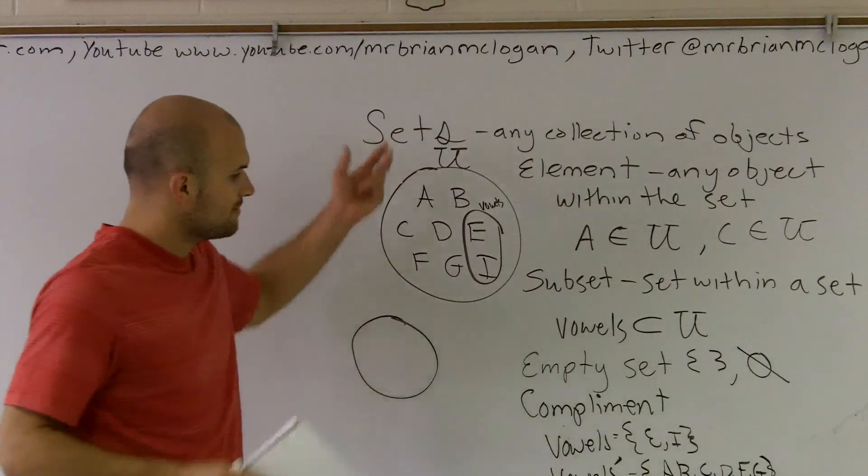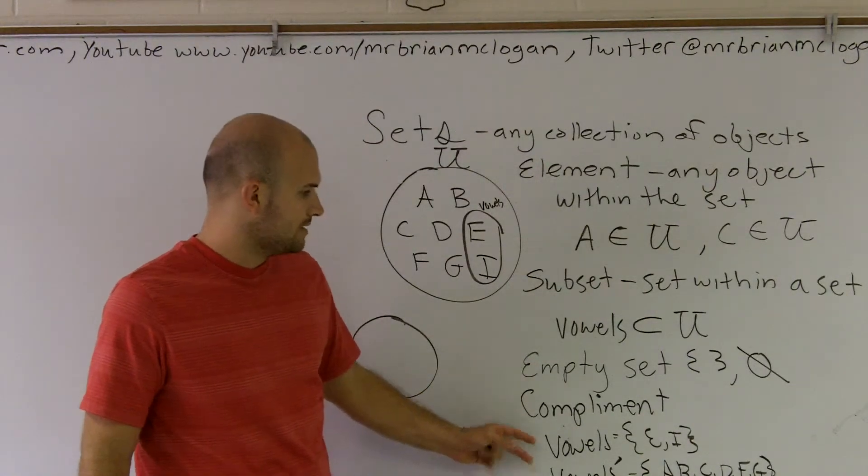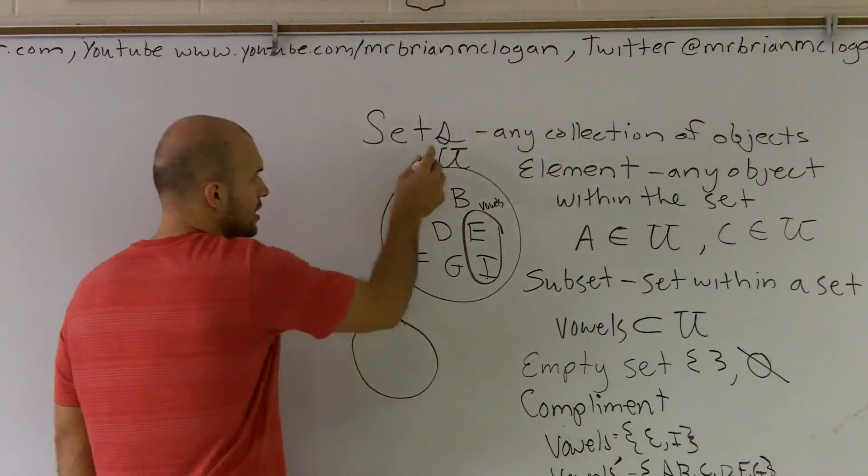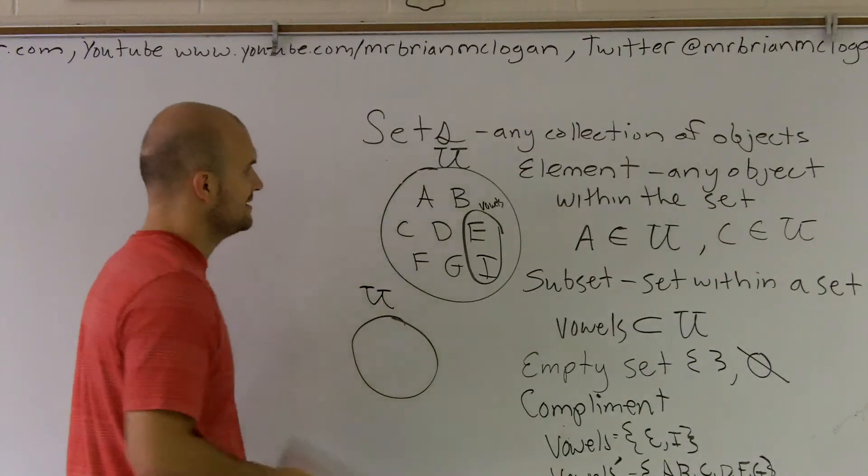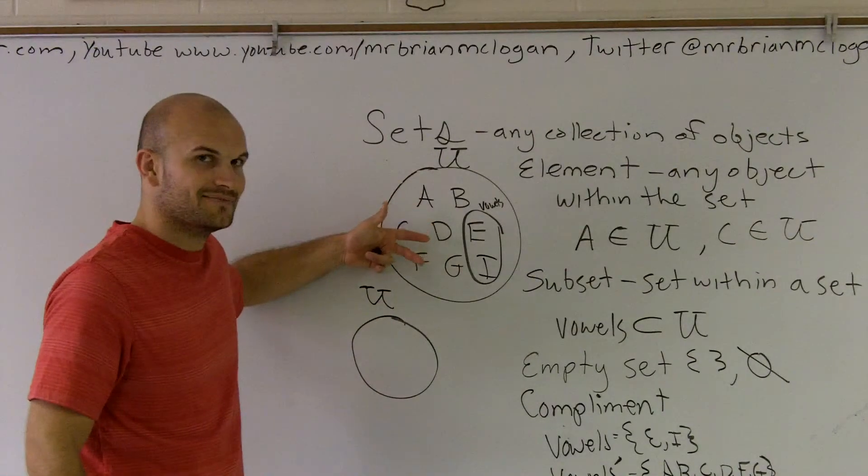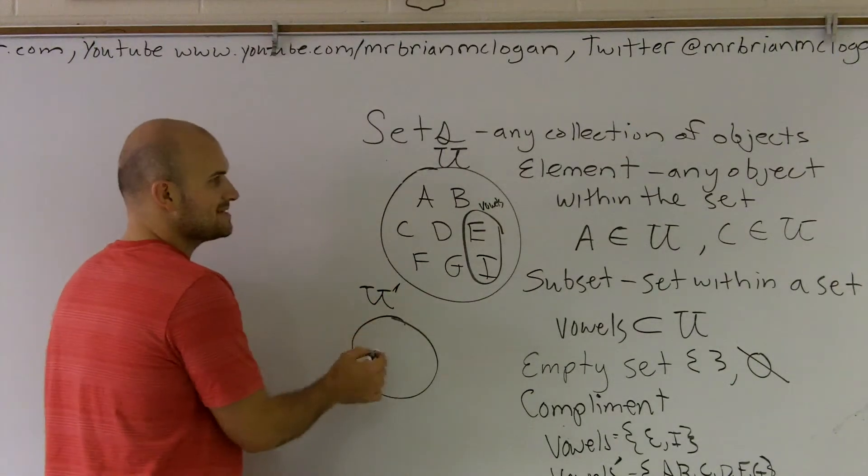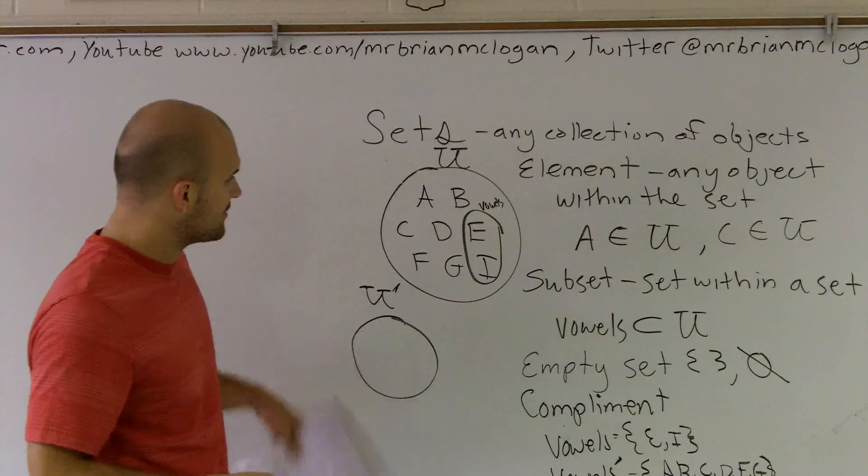And that's pretty much how you're going to do complement. Now, what I was going to show you, if I was going to say, what is the complement of U prime, my universal set? So, what's everything that's not in the universal set, but that's in the universal set? Well, you can see that U prime, that would be an empty set, because everything's already in the universal set. So, that would be something that would be an empty set.